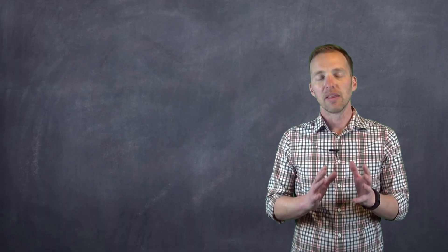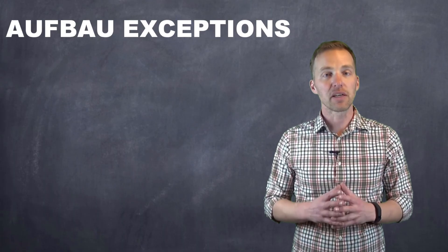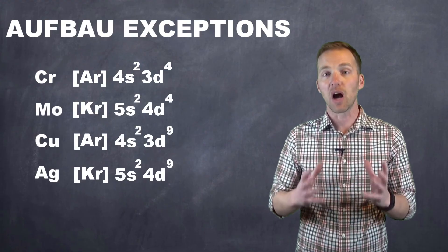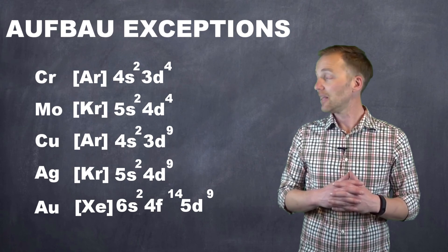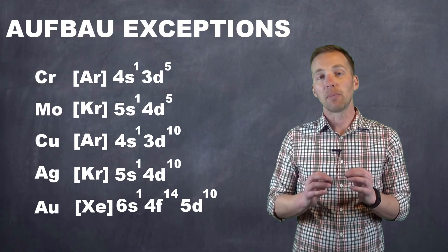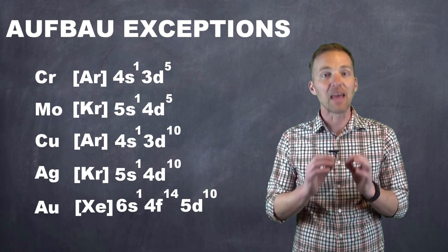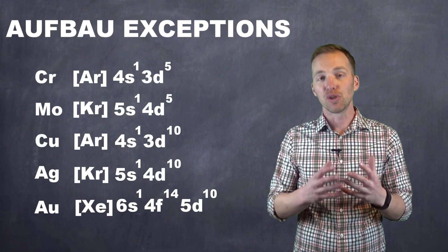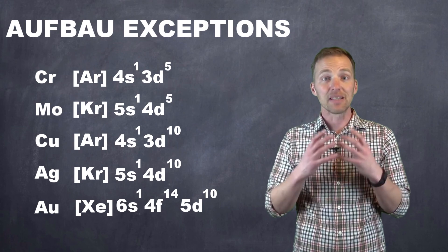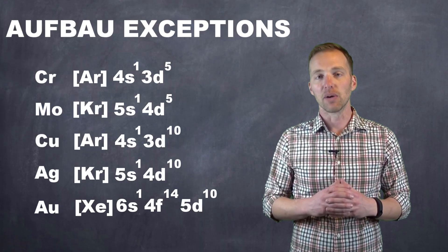There are many exceptions to the Aufbau principle, especially for larger elements with more electrons. For example, chromium, molybdenum, gold, silver, and copper have electron configurations that look different from what the Aufbau principle would predict. For the most part, though, the Aufbau principle will allow us to arrive at the appropriate electron configuration. It is important to note that this is just a method for assigning electrons — it is not the way electrons form into the element, and it's not necessarily meant to make physical sense. It is simply a method that gives us, with a few exceptions, the correct configuration.